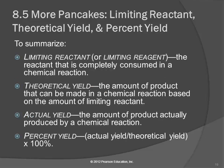Summary: The limiting reactant — sometimes called the limiting reagent — is the reactant that is completely consumed. It limits how much product you can make. The theoretical yield is the amount of product that can be made theoretically if you use up all the limiting reactant. The actual yield is the amount you actually make. And the percent yield is the actual divided by the theoretical times 100%.